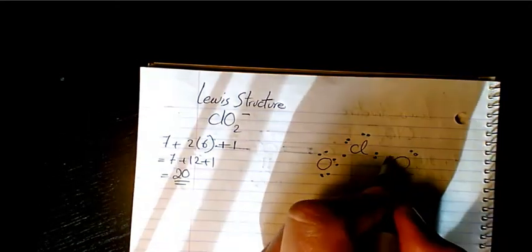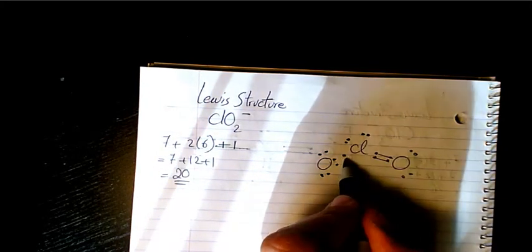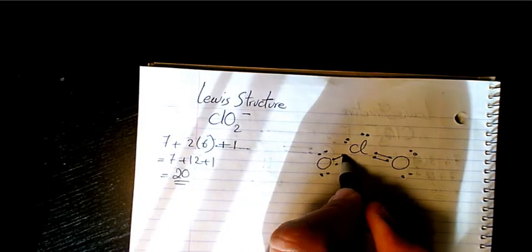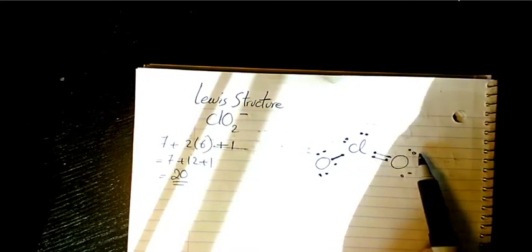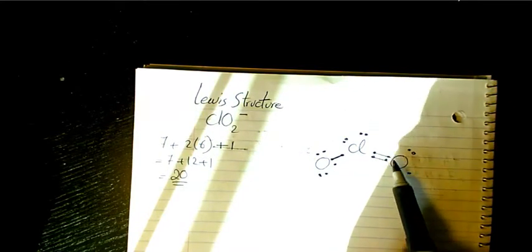Then we connect this and here we have two lone pairs. So we have one more electron here, so I connect it with oxygen. So then the octet rule is valid for oxygen: two, four, six, and eight.